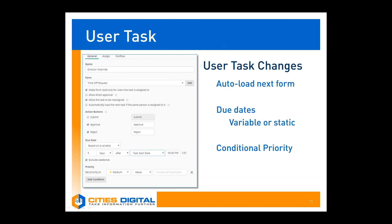Another large change to the process modeler is in regards to user task properties. It's now possible to auto-load the next form in a forms process if the current user will be assigned it. So if somebody is filling out a form and they submit it, and it's their task to fill in the next form, instead of having to jump back and forth between their inbox refreshing and loading forms, it'll just load that form immediately for them. Due dates have been added as well, and you can base these on a variable in the form or use a static date.